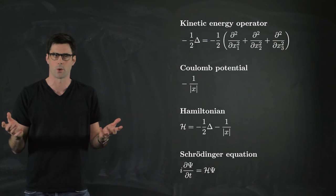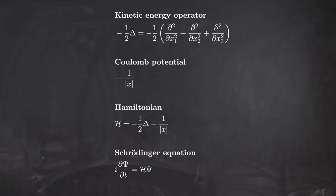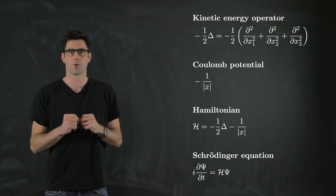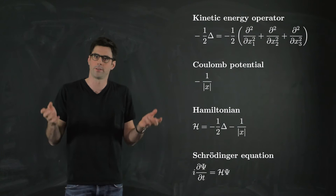The major equation corresponding to Newton's second law in classical mechanics is now the Schrödinger equation. It describes the evolution of the wave function through time and reads: i ∂ψ/∂t = Hψ. In general, this equation is very complicated to solve, but it has one nice property: it is a linear equation. This means if we have two solutions of the equation, their sum is also a solution. This is known as the superposition principle.